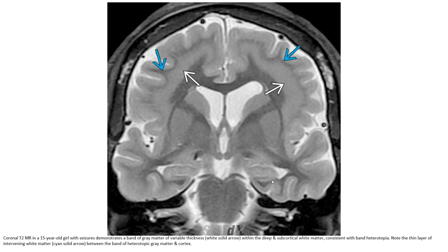Let's see the first case. This is a coronal T2 image in a 15-year-old presenting with seizure, demonstrating a band of gray matter of ribbon-like thickness. The gray matter region between deep and subcortical white matter is consistent with band heterotopia. Notice the thin layer of intervening white matter between the band of heterotopic gray matter and the cortex.